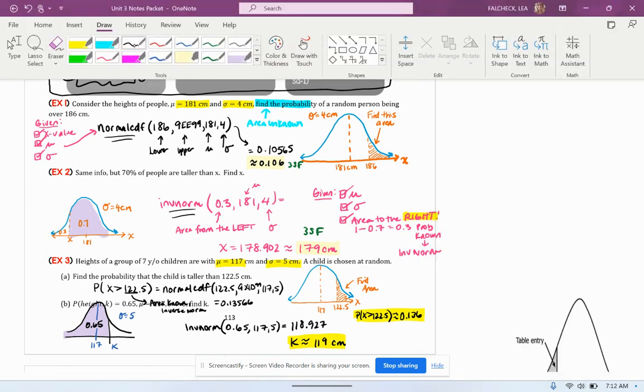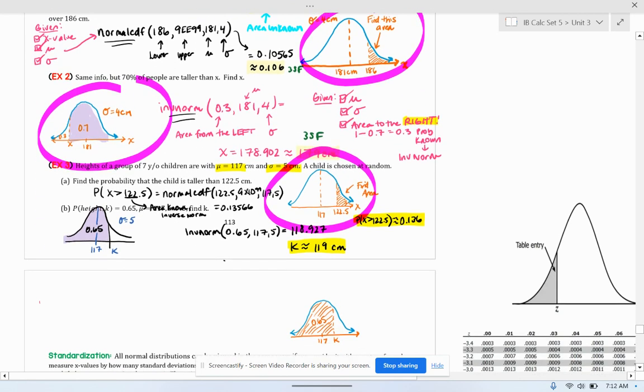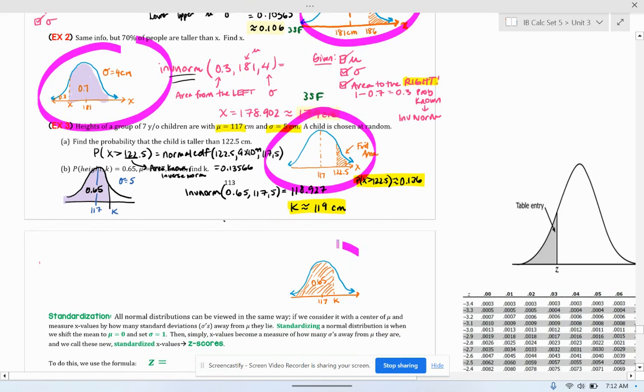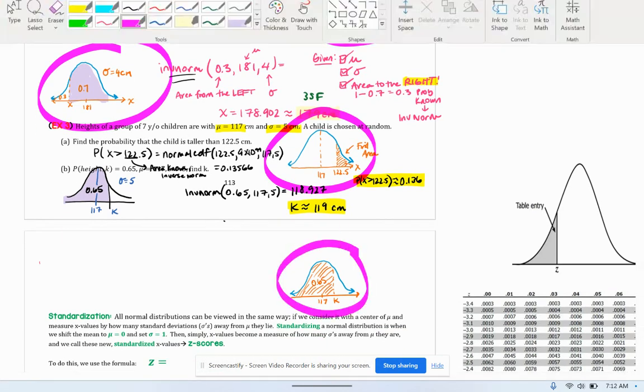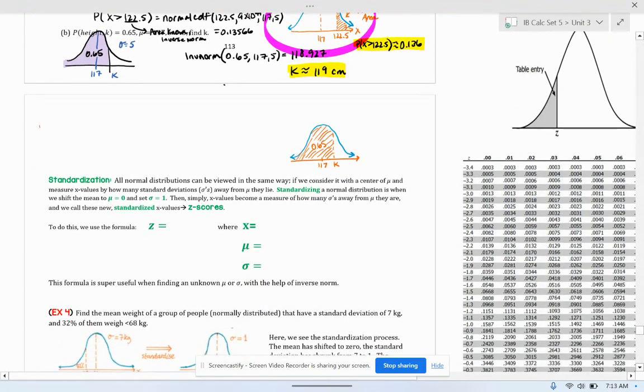We had the same plan of attack every single time when we were trying to solve these. We always drew the picture first. I gave you the picture here, here, and here. The picture for part Example 3b ended up on the other page, but that's always going to be your plan of attack. When you're solving normal distribution problems, you're going to draw a picture first.